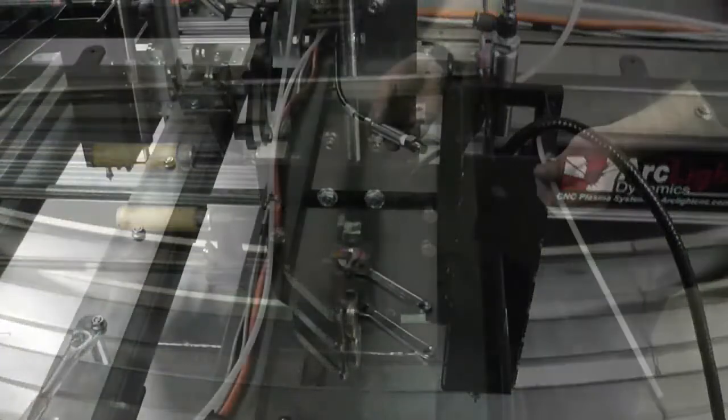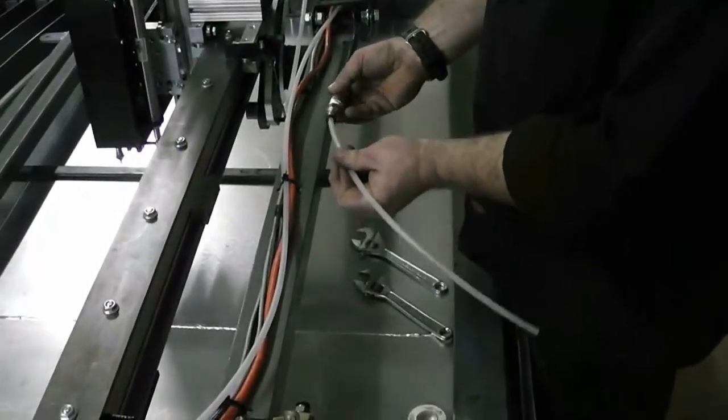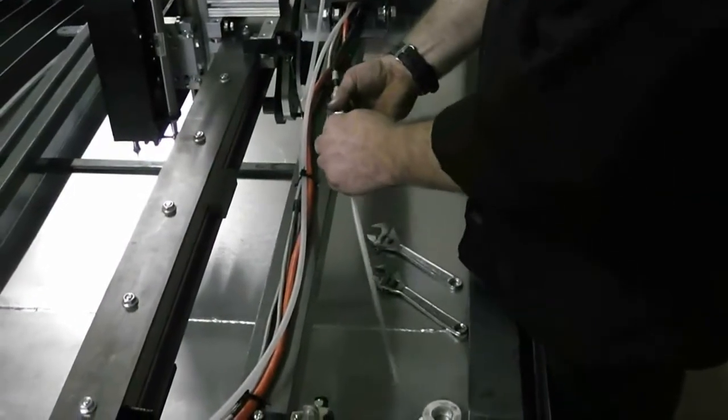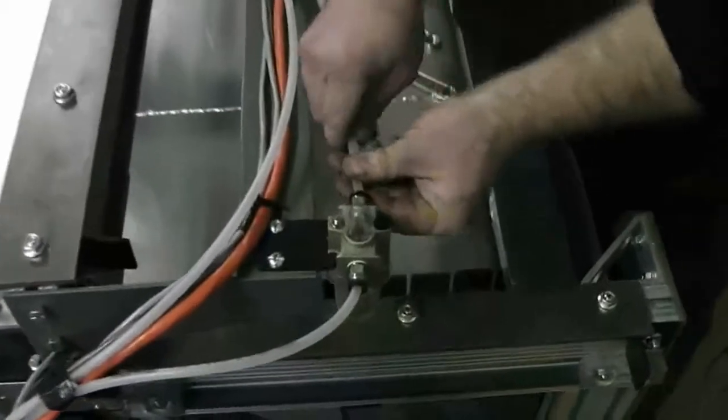Now, the next step will be to feed the line on the end of the pneumatic plate marker through the cable chain and use a short section of tubing to connect it to the oiler. And then you will zip tie everything in place.